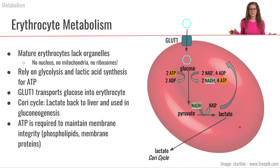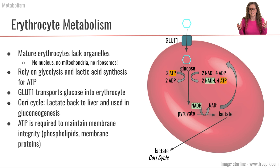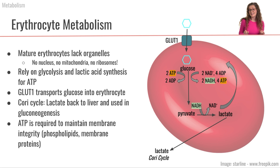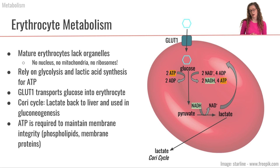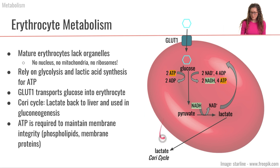Erythrocytes do not have a nucleus, they do not have mitochondria, and they do not have ribosomes. So really erythrocytes are just a sack of hemoglobin responsible for transporting oxygen around the body. However, erythrocytes still need some ATP — they need it to maintain their cell membrane and the proteins lining it.